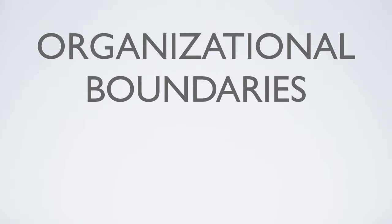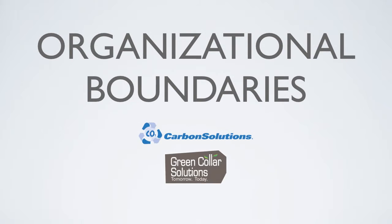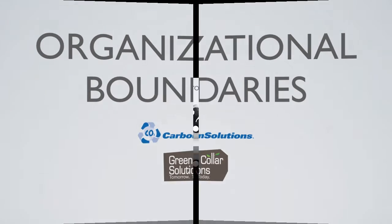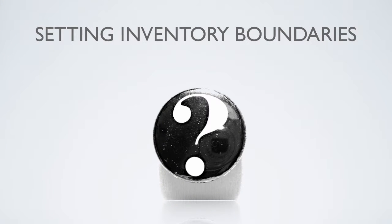Organizational boundaries. Setting inventory boundaries. In order to create a greenhouse gas inventory, companies must quantify their greenhouse gas emissions. But first, they need to determine which emissions they will account for. This is an important step of the planning process known as setting boundaries.